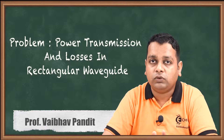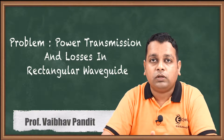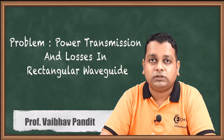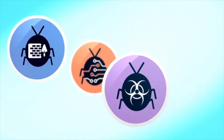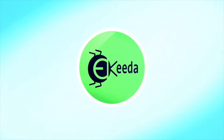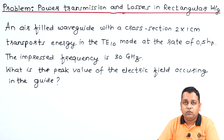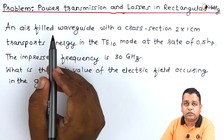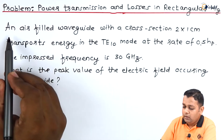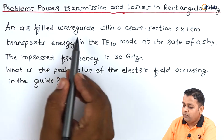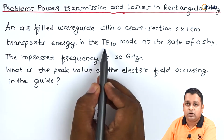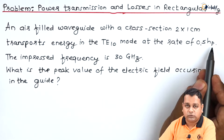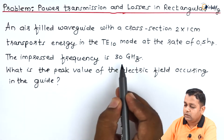In the last video we gained knowledge of power association — whatever power is delivered and whatever power is lost during propagation in this waveguide. Based on those formulations, let us now consider a simple problem. We are provided a problem statement corresponding to power transmission and losses in a rectangular waveguide. The statement is: an air-filled waveguide with a cross section of 2 by 1 centimeter transports energy in the TE10 mode at a rate of 0.5 horsepower.